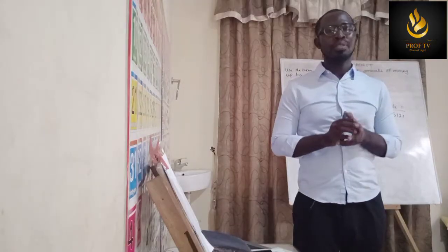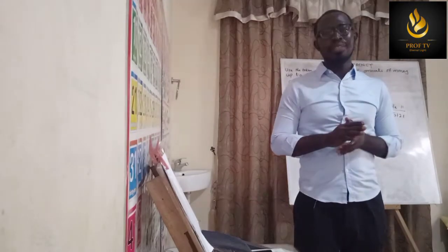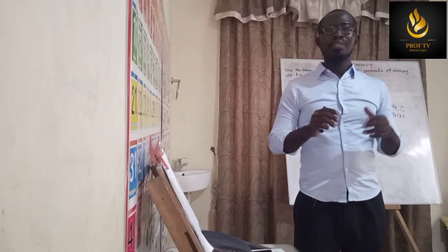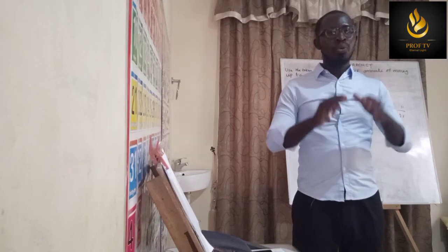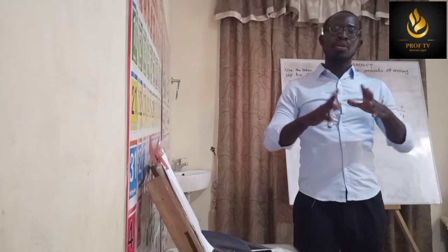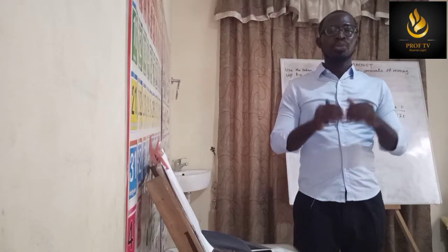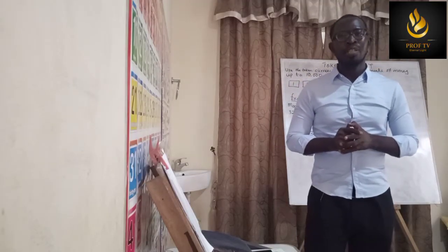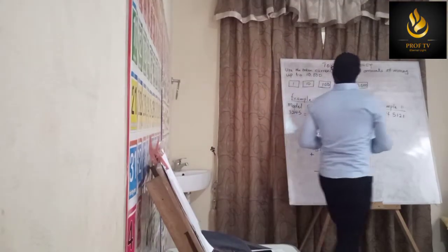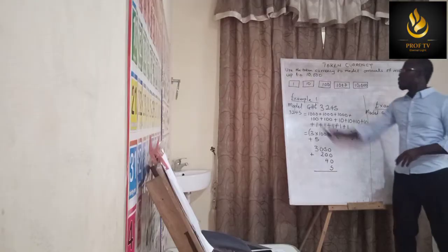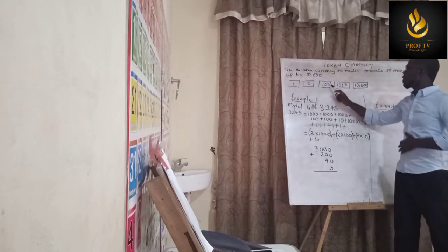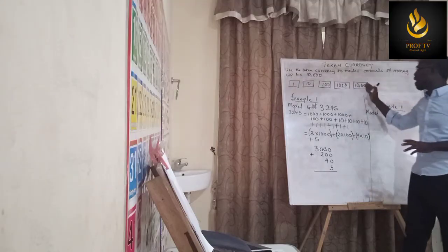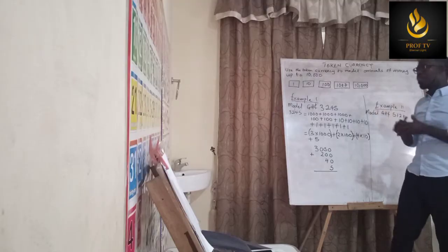So if it is in Ghana cedis, because we are in Ghana, it is 10,000 Ghana cedis. If it is in dollars, we can say 10,000 dollars. Whatever your currency is, we are going to model a token currency to understand this subject. We have our one Ghana cedi, our 10 Ghana cedis, our 100 Ghana cedis, our 1,000 Ghana cedis, and our 10,000 Ghana cedis. These are the token currencies we have.